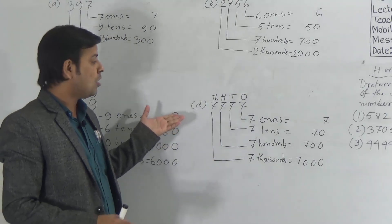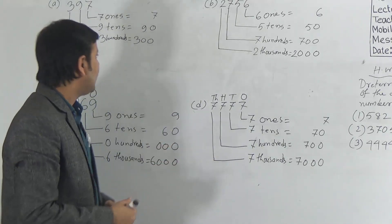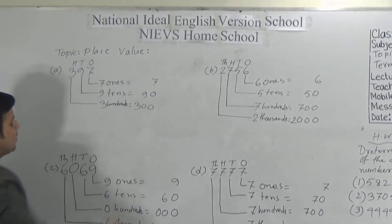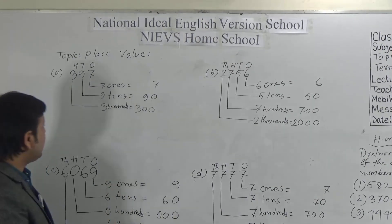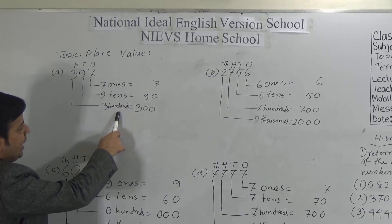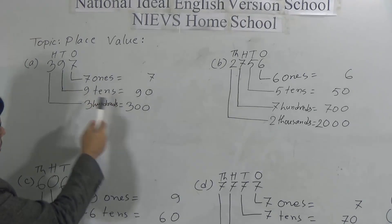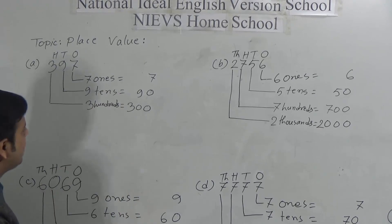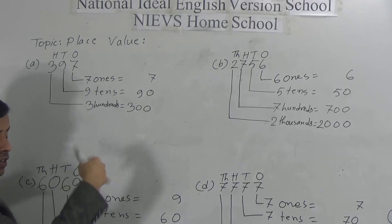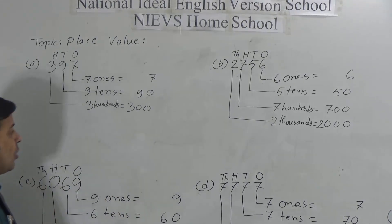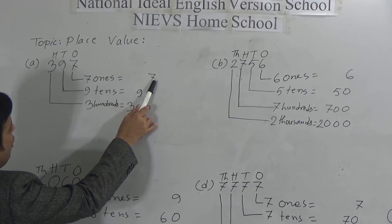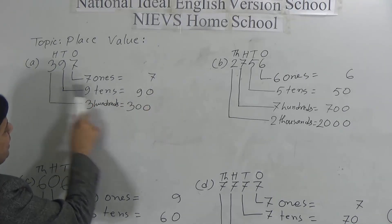Again I am telling you: first you have to indicate the position of the digits — ones, tens, hundreds, then thousands. Then according to its position, write the digit first, then write the position. When you write the ones place, multiply the digit by one. When you determine the tens position, multiply the digit by ten. When you determine the hundreds place, multiply the digit by one hundred.